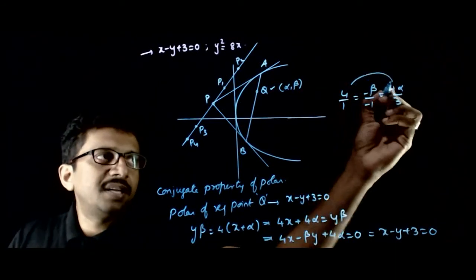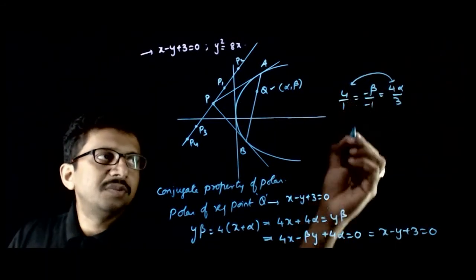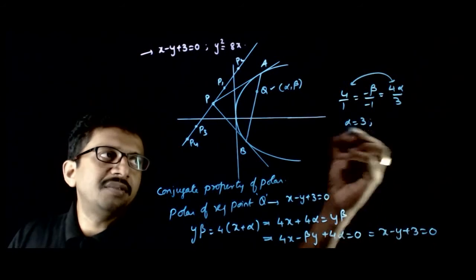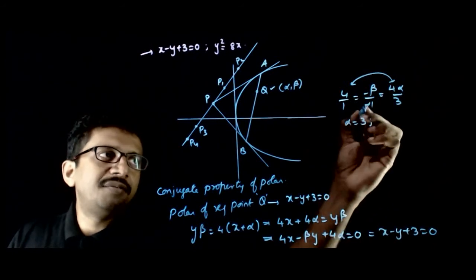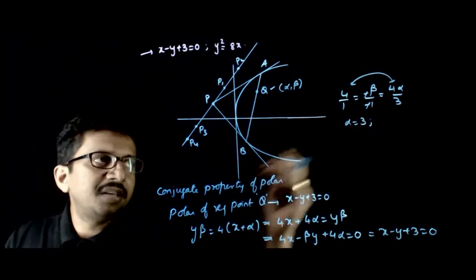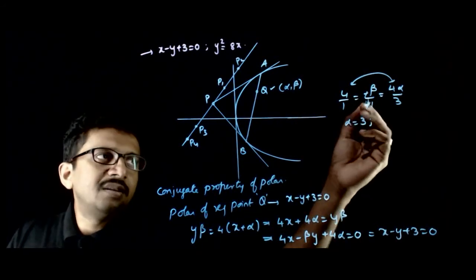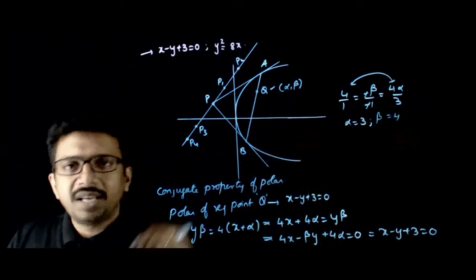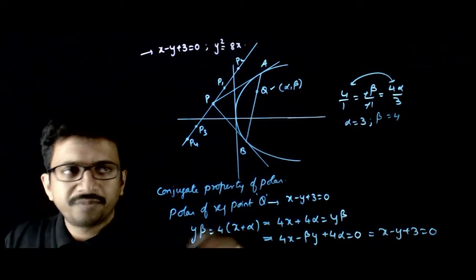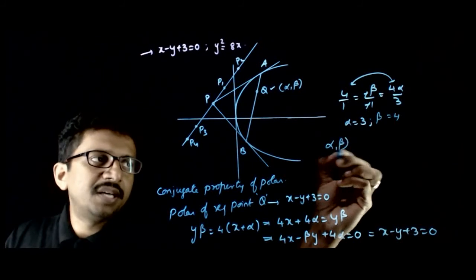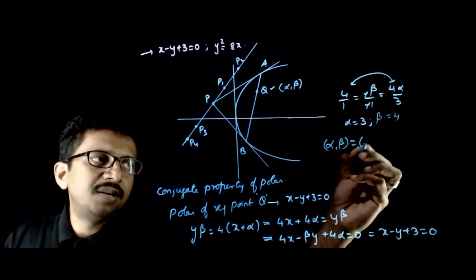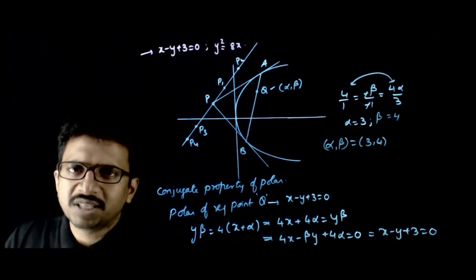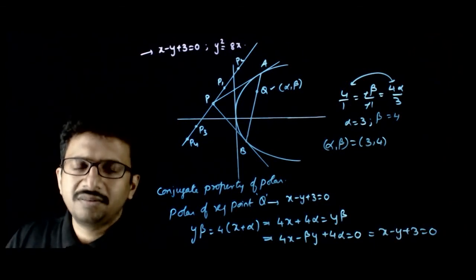Equating the ratios: 4α/3 = 4 gives α = 3, and β/1 = 4/1 gives β = 4. Hence, (α, β) = (3, 4). We got the same answer as expected from the visual observation. Thank you.